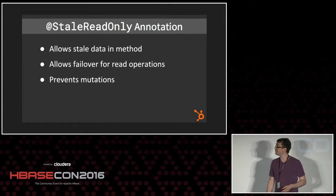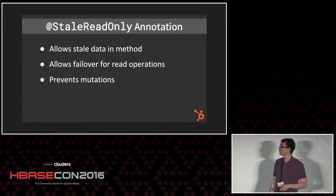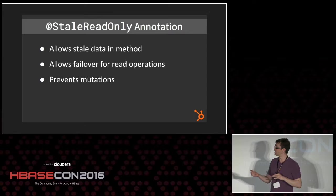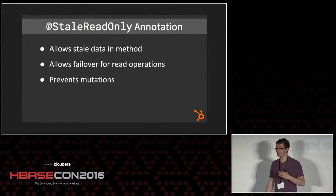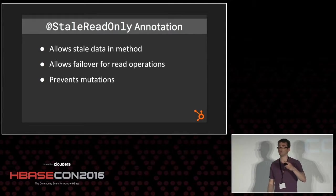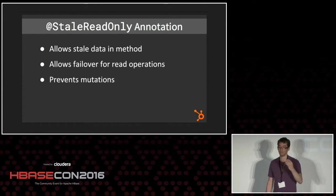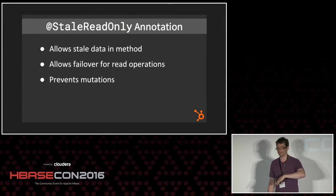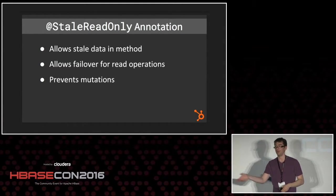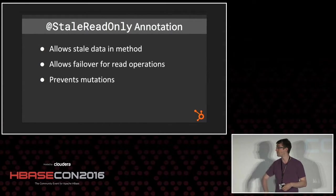To make this easy for app developers, we introduced a stale read-only annotation — a method-scoped annotation using a Guava bind interceptor that wraps a method. You declare that stale data is okay and no mutations are allowed, and it will appropriately fail over for gets and scans. A scan will fail over only if it hasn't called next yet, and a get will fail over as long as you allow it. You can also specify in the annotation whether you want to go to the primary or accept stale data from the secondary.